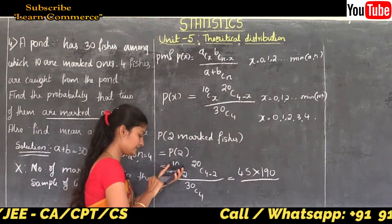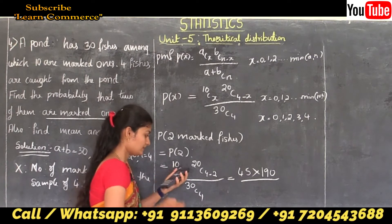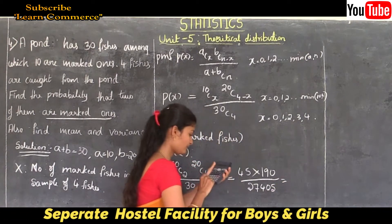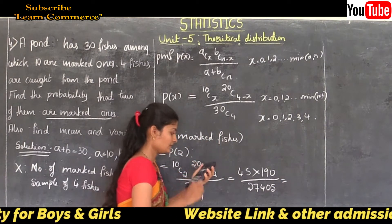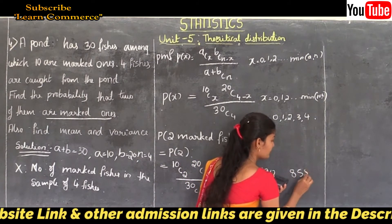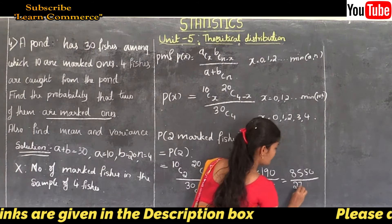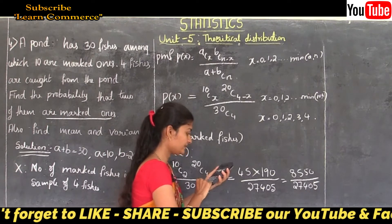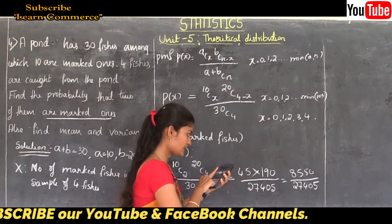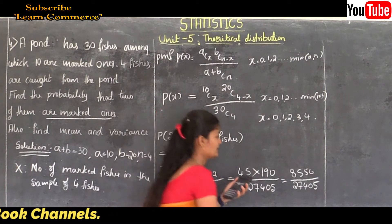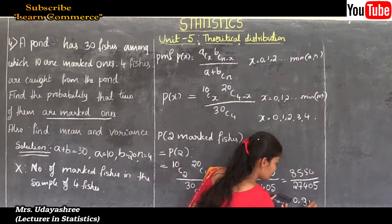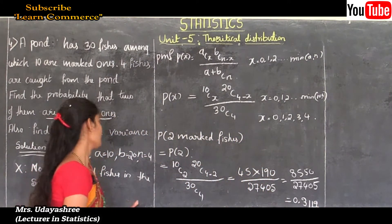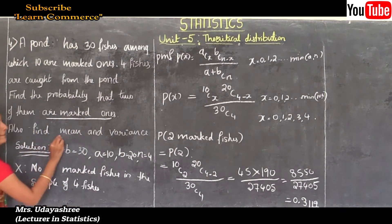20 C 2 is 190, and 30 C 4 is 27,405. So P(2) equals 45 times 190, which is 8,550, divided by 27,405. That equals 0.319. This is the calculated answer for the probability of getting two marked fishes.